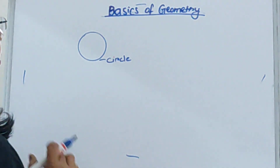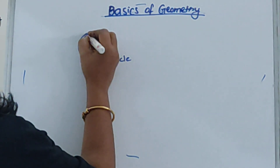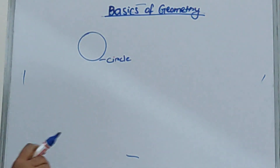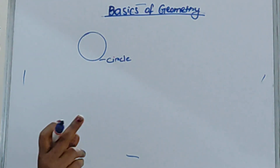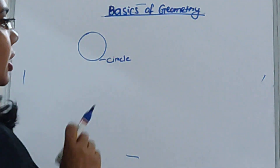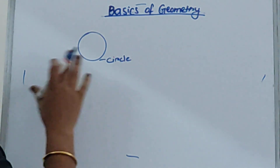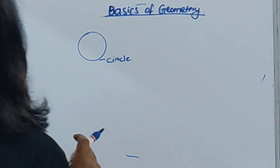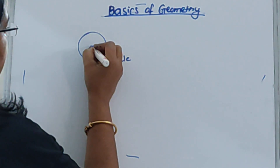This is called a circle. Do you know what shape it is? It's a closed shape. It's called a closed shape because a circle starts from a point and it ends at the same point — that's why it's called a closed shape. In previous classes we have learned this; you can refer to those videos also.